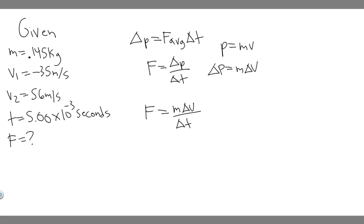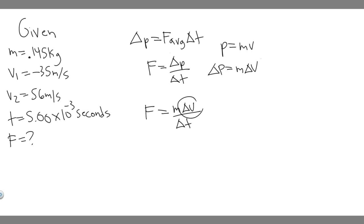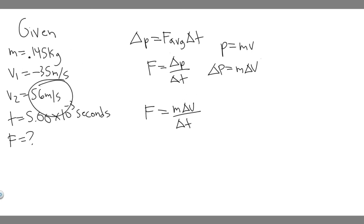Looking at all these variables, this is what we're given: the mass of our baseball, two velocities — V sub 1 as the initial velocity and V sub 2 as the final velocity — and the contact time. So all we have to do is plug everything in and we'll be able to solve.